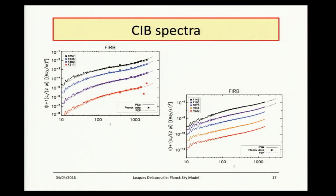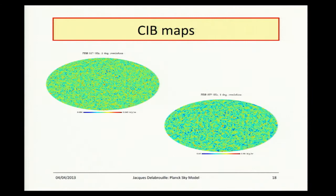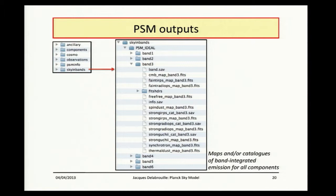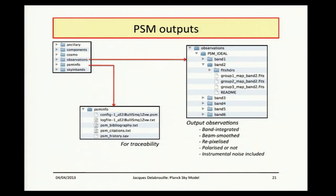A few more words about the output of the PSM. A run of the PSM actually produces hundreds of maps. There are maps which describe the components, all the ancillary data, spectra — everything is written, so you have all the information about the sky and the observations. For each component, you have maps for temperature, polarization, etc. You also have these maps integrating the bands of your instrument, observations smoothed to the circular beams, and some information for traceability. This is then passed towards the next step of the simulation, which actually scans this simulated sky to produce timelines similar to the Planck timelines.